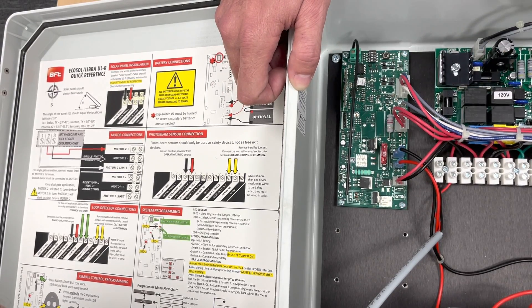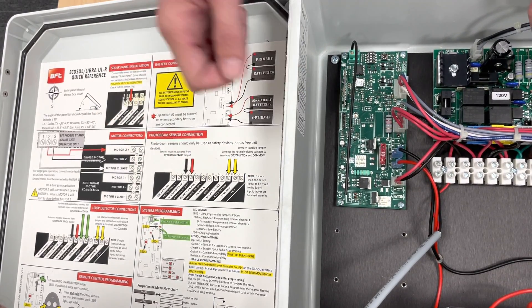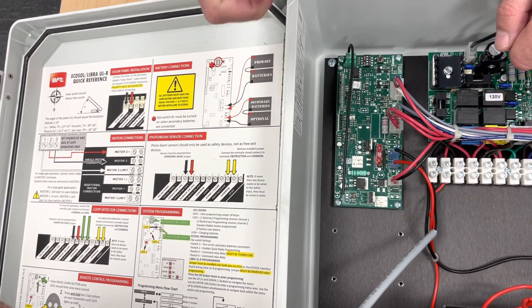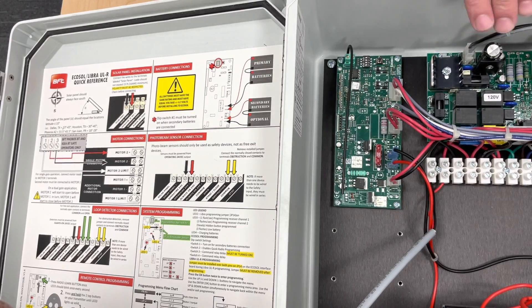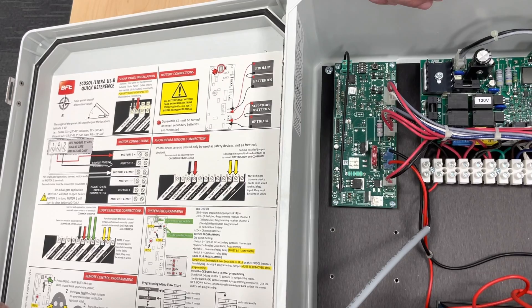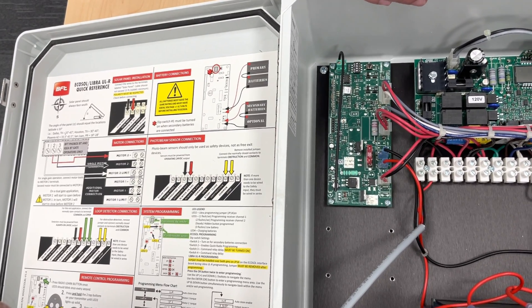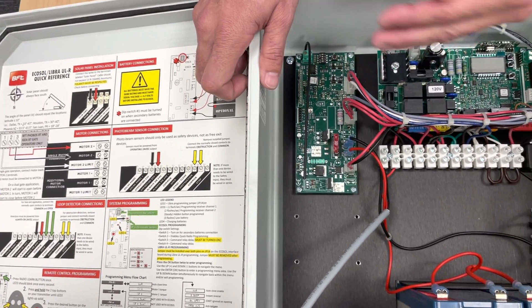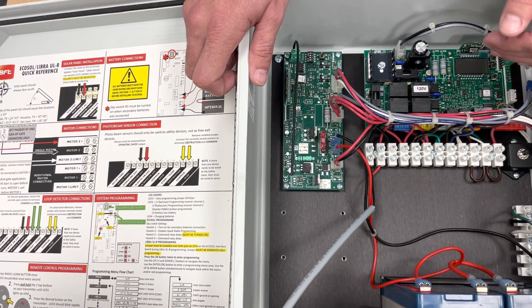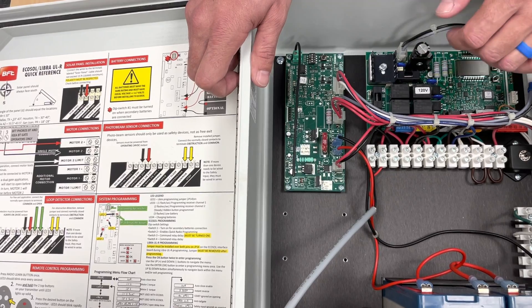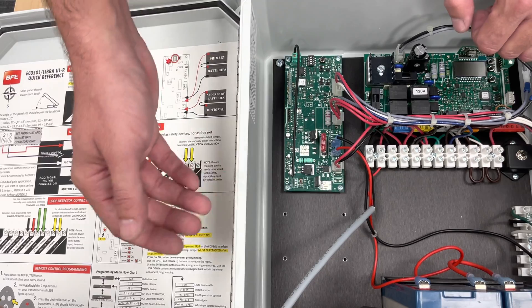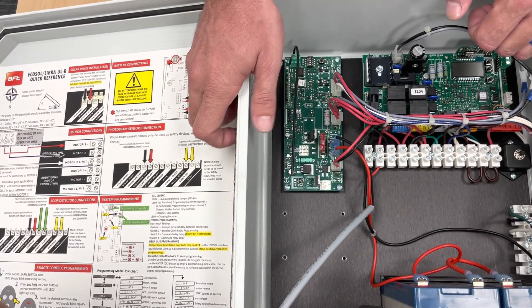Dip switch number two is for remote programming. You have to make sure dip switch number two is on to be able to program your remotes. And then three and four are your times, because basically this board sleeps. You give it a remote activation, it wakes up and then sends the command over to the Talia light. So three and four actually delay the time of when that command is sent, just to make sure your board is getting it right after it turns on. So you might have to play with three and four. The fastest setting is three up, four down, but that might be too fast for some boards like the Giotto Berry Arm.